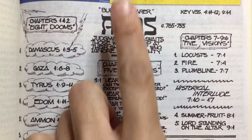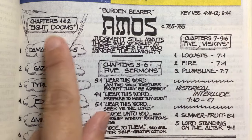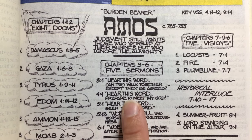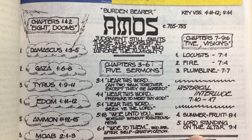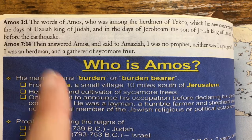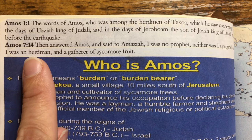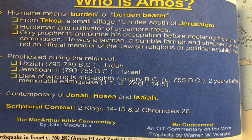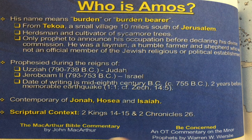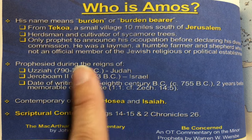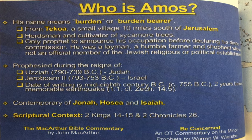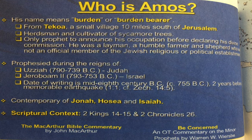Underneath, going along with these outlines, it shows some key verses. In chapters 1 and 2 there are eight dooms that I'll show on a map. We also have five sermons, five visions, and three promises. Here we have two verses — Amos 1:1 and Amos 7:14 — that tell us who Amos is. This box from the MacArthur Bible commentary talks about who Amos was, when he prophesied, who the other prophets were at that time, and the scriptural context.